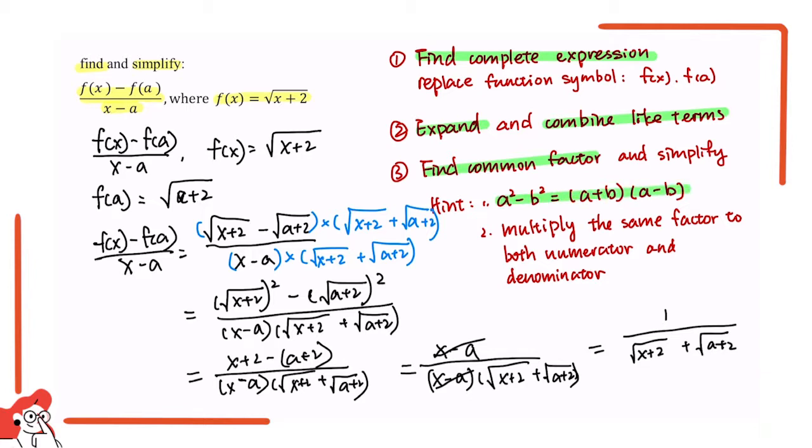We can multiply the sum of those 2 square roots to get rid of that square root. But also remember, since we are in a fraction, to not change the value of the fraction, we want to multiply the same factor to both the numerator and denominator. Now we are done with the question. Thank you.